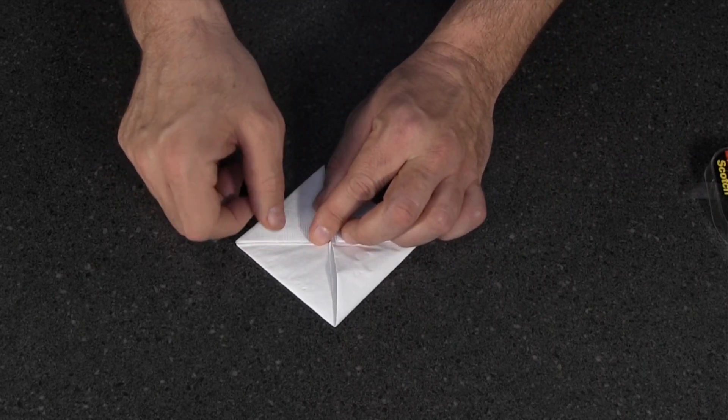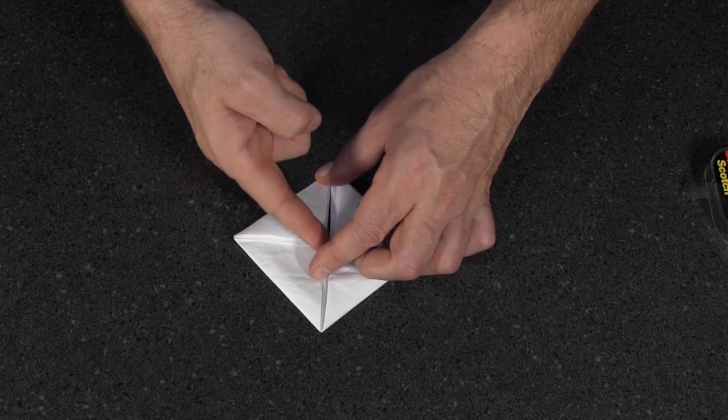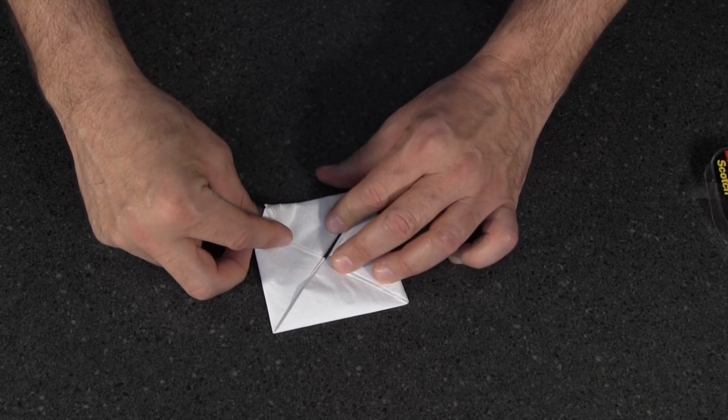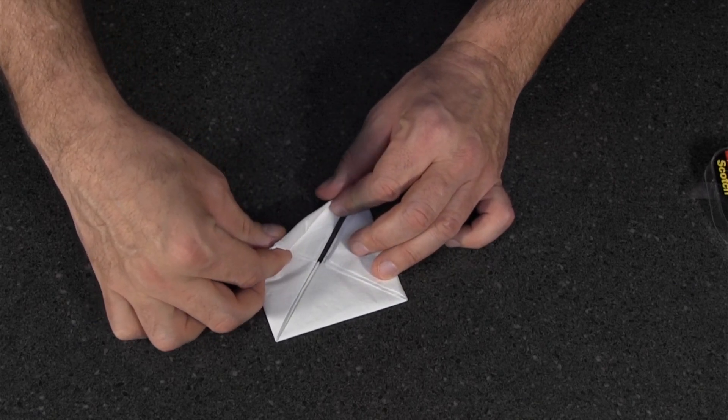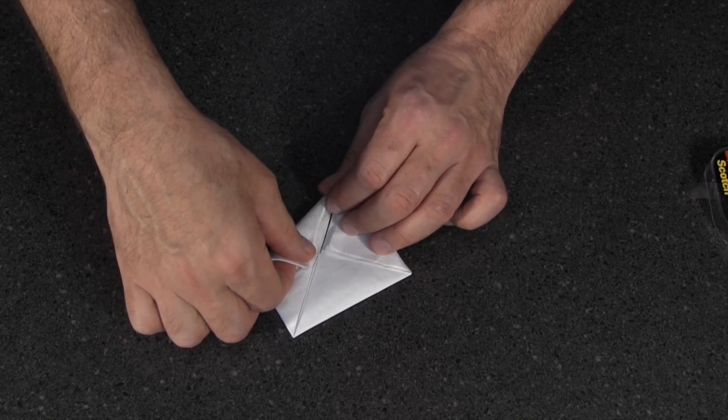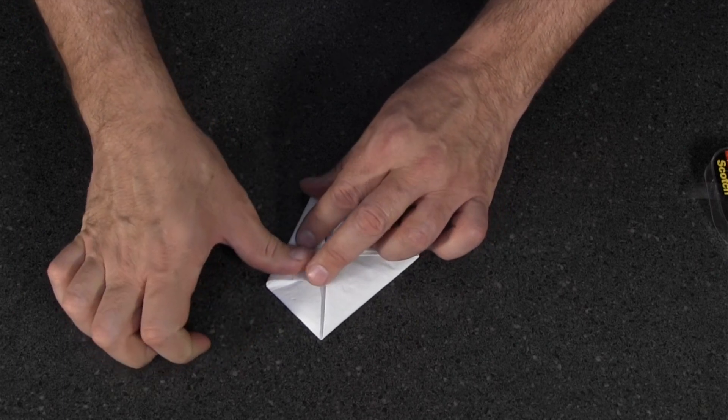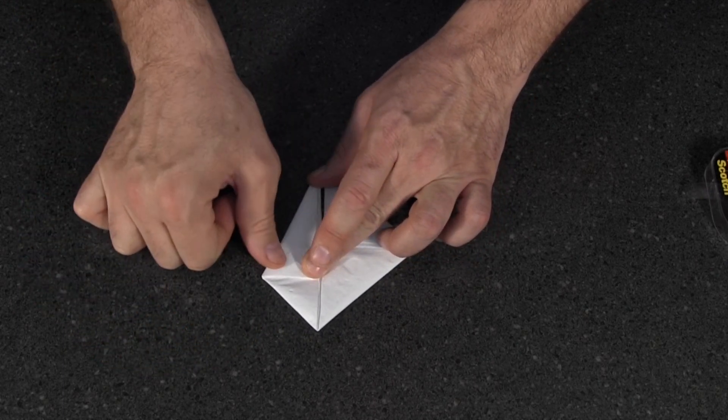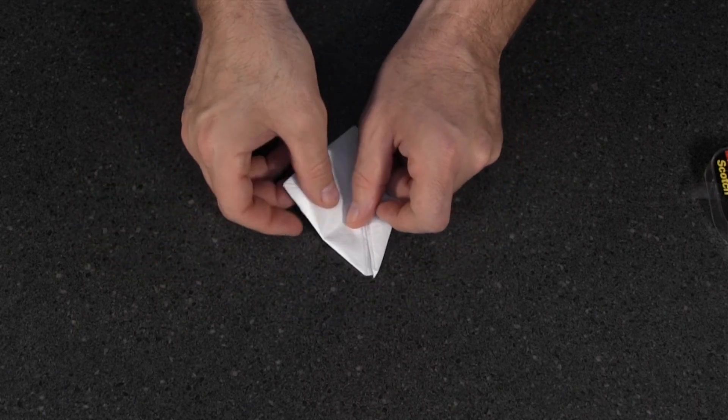Now you're going to bring this edge here up to this edge in the center. I'll show you, it's a little tricky here, but you've got to fold it right in the middle here and bring this edge over to this edge like that. Give that a nice crease, and you're going to do the same thing with the other side.